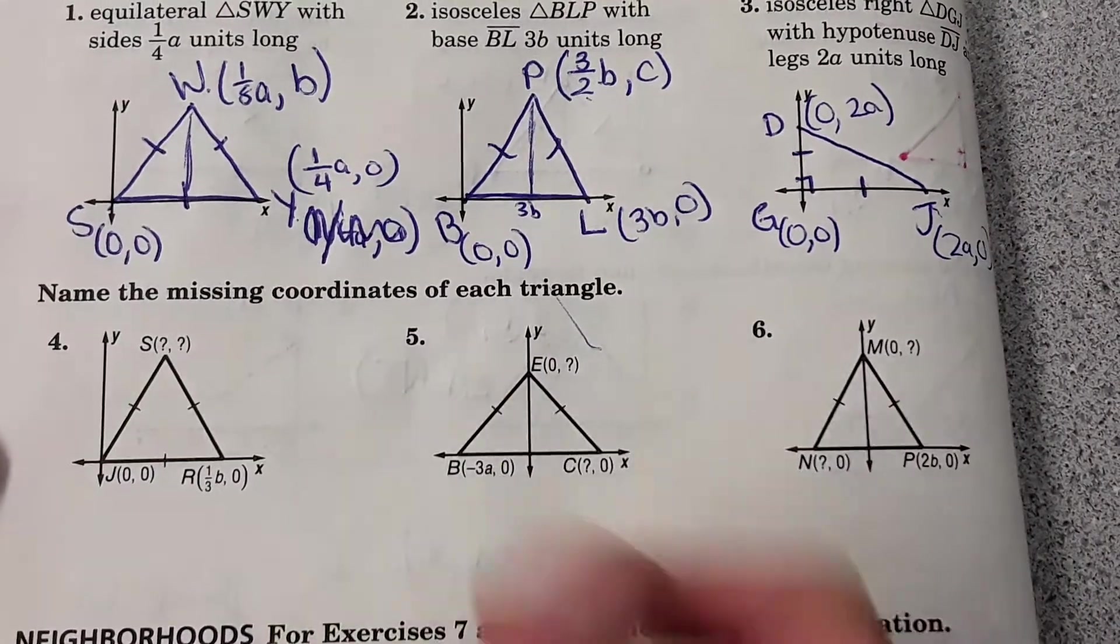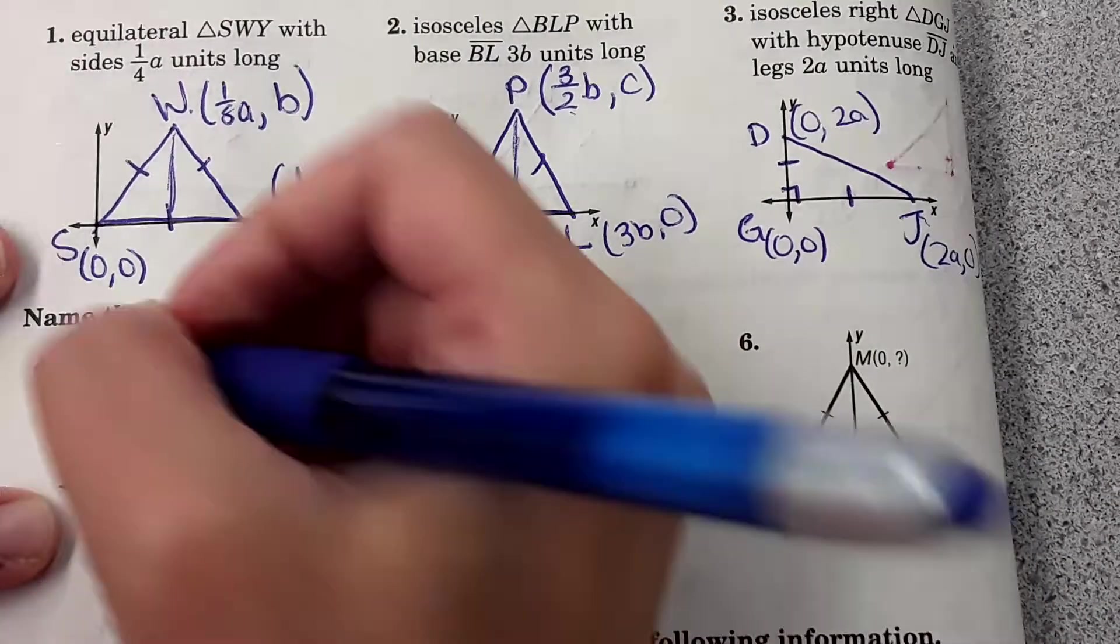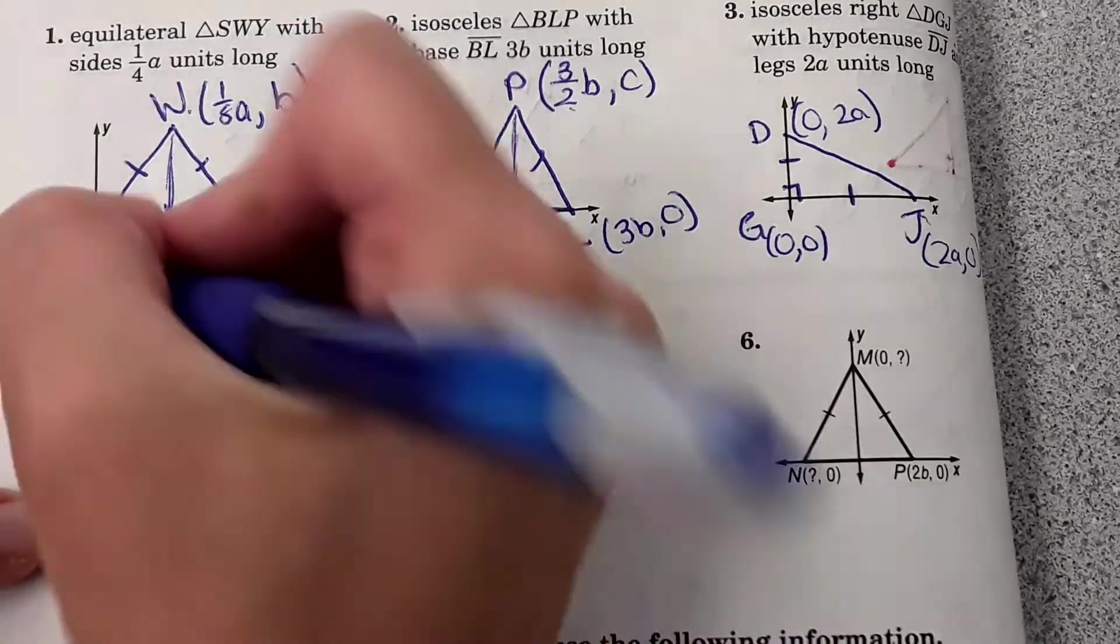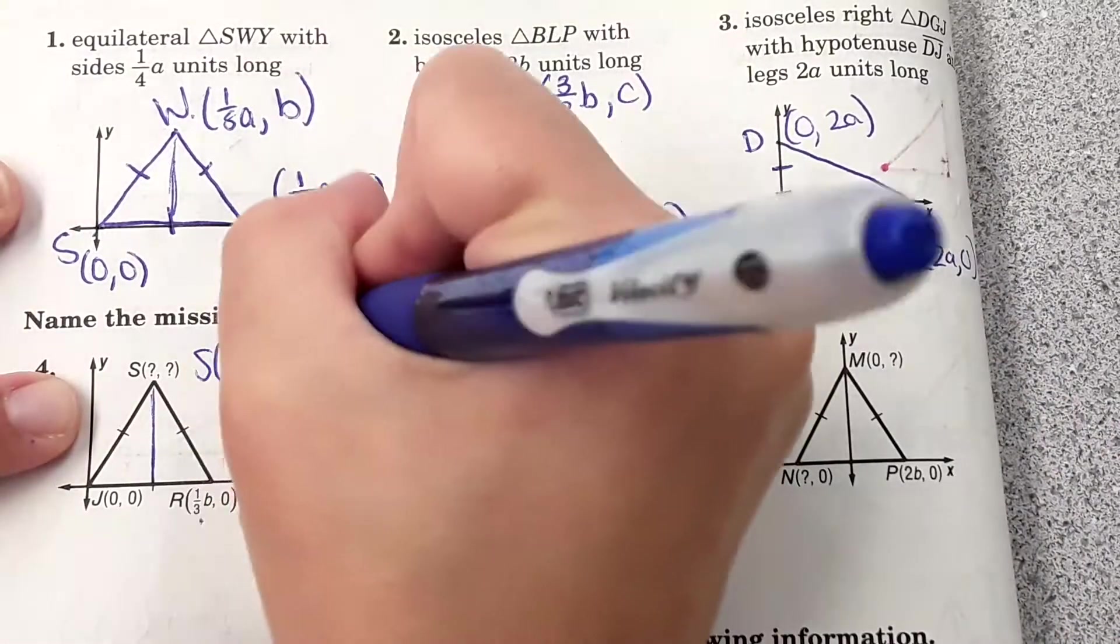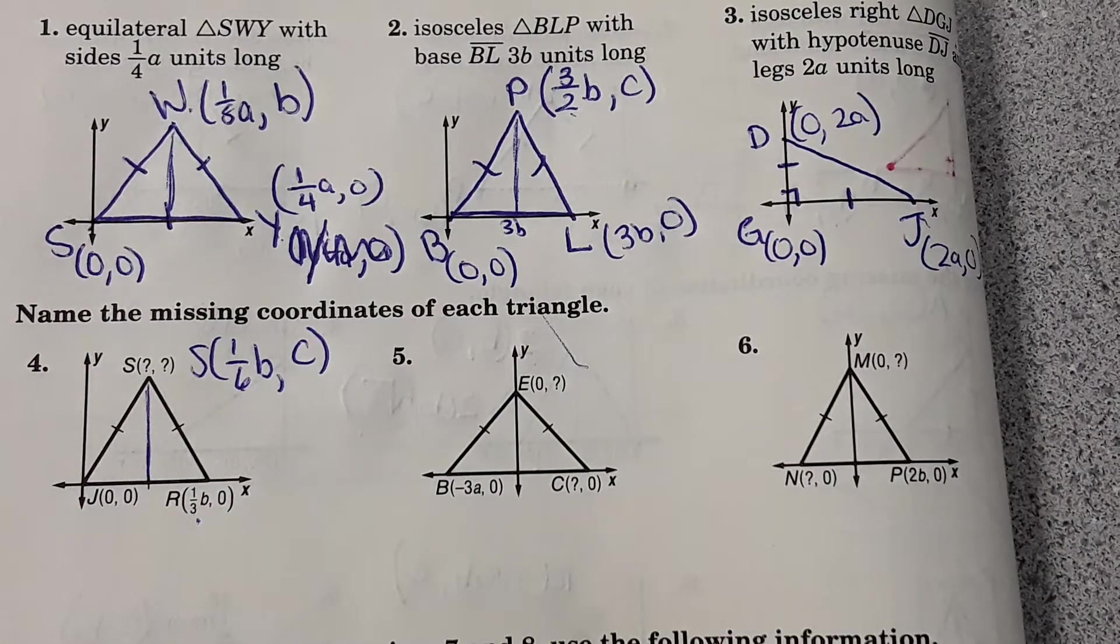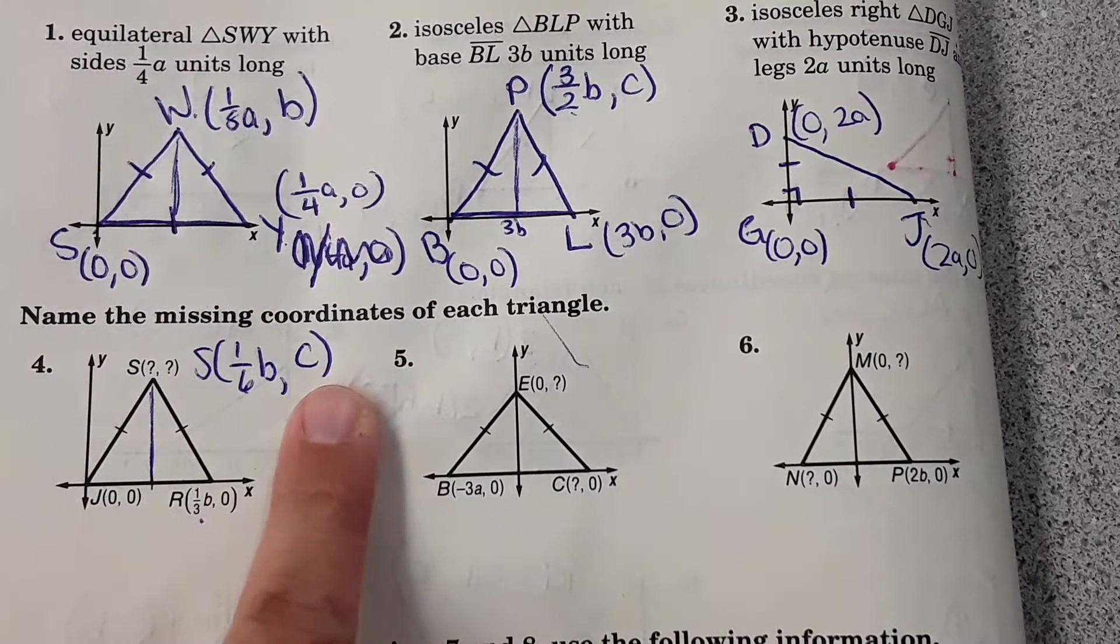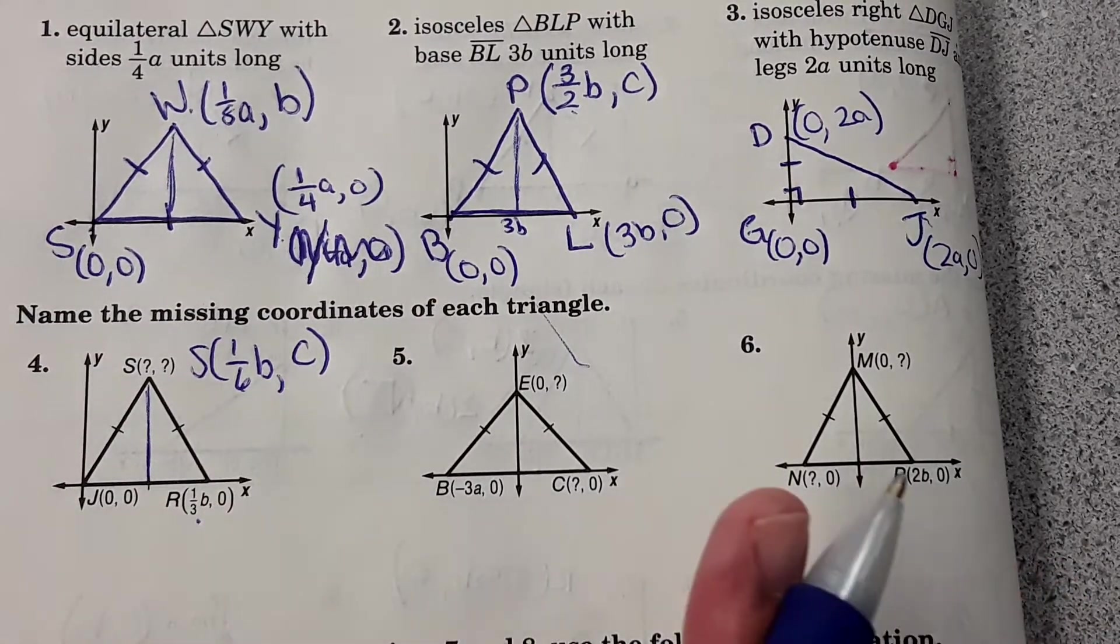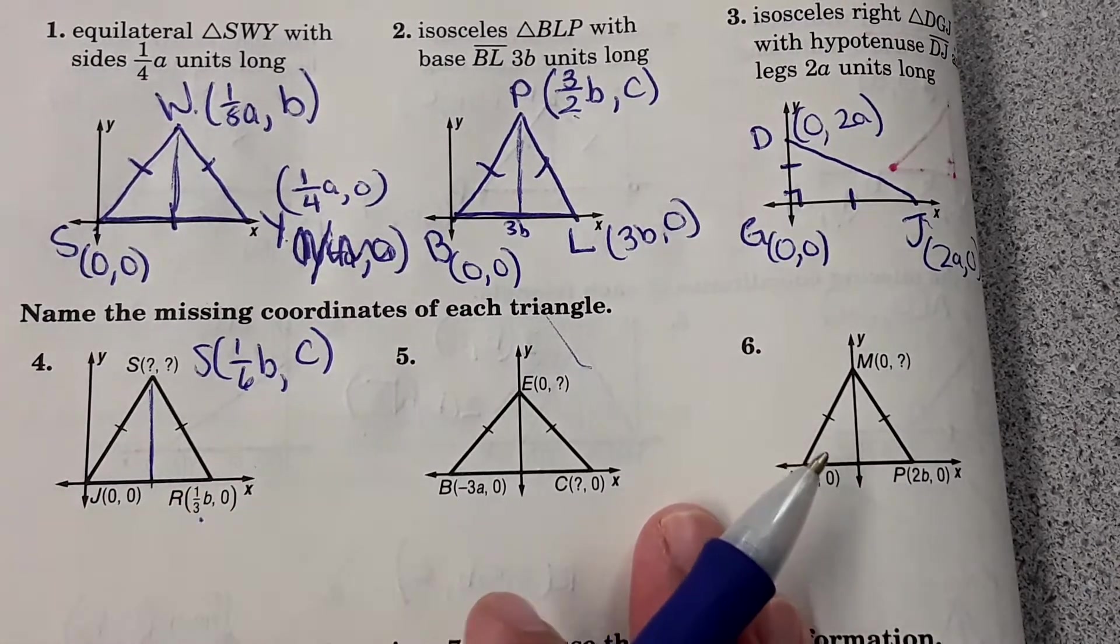Here, four, five, and six, we'll finish off with those three. Four says name the missing coordinates of each triangle. Well, this would be at the halfway point. Half of one third would be one sixth, so S is at one sixth B. The height we don't know. Again, when you're looking at the answer choices, look for this one sixth B. And then if there's something else over here, like square root of three over six, that's okay. That's just a concept that you'll learn later. It's still the right answer.